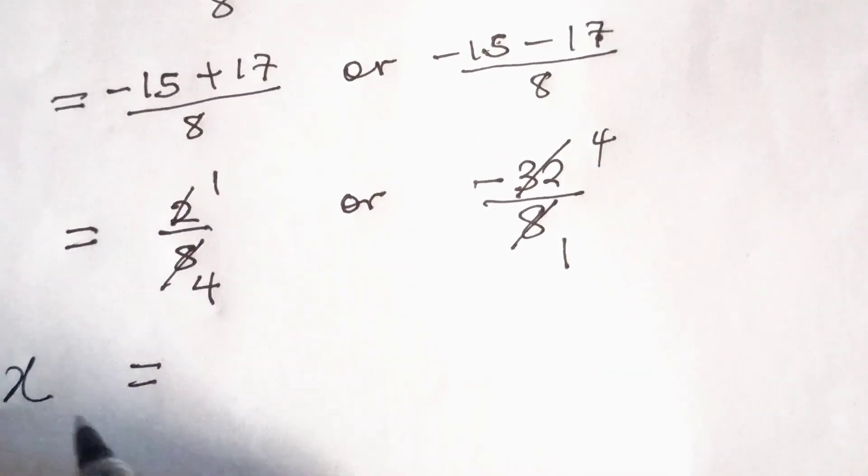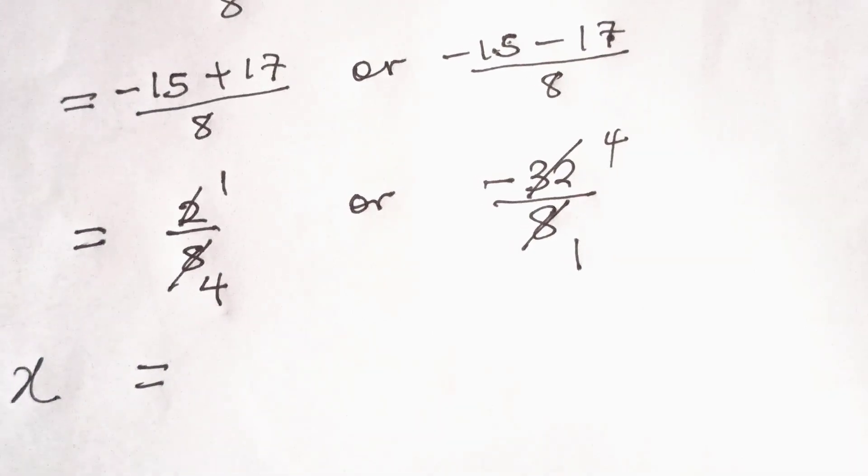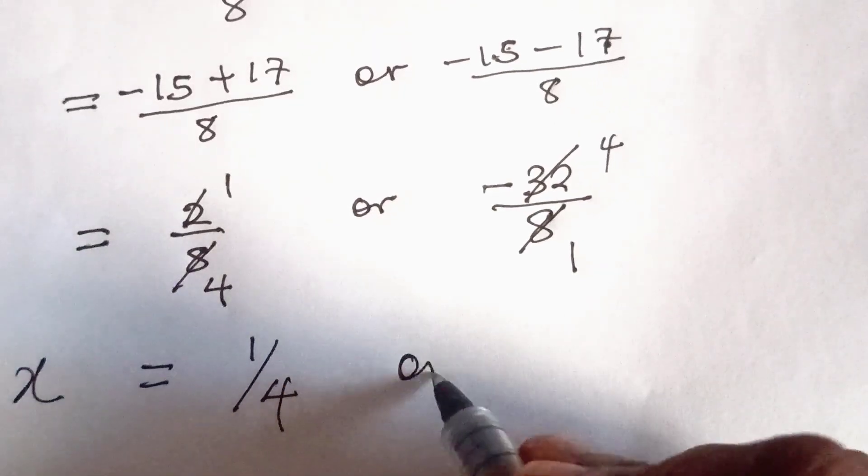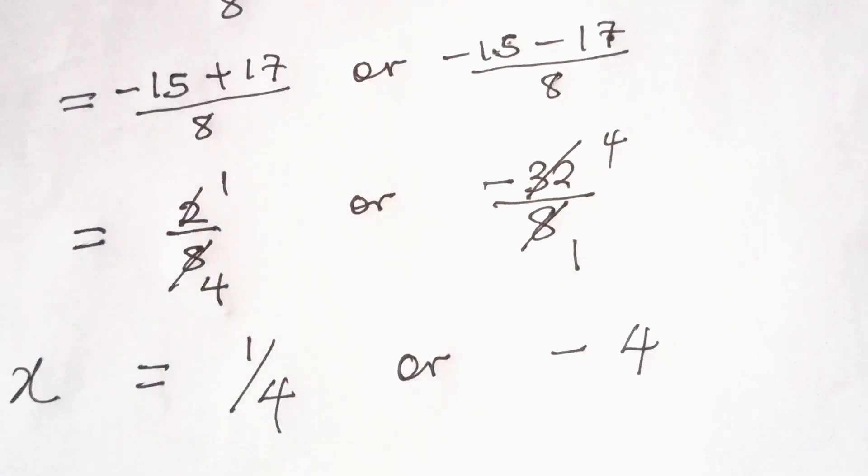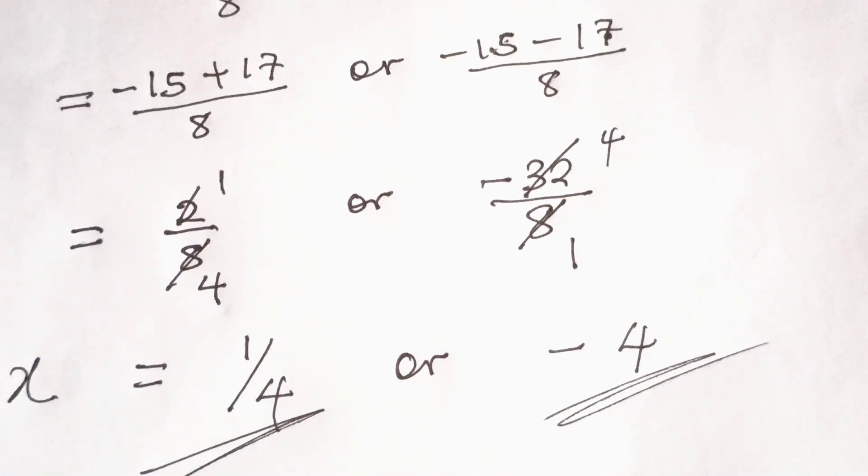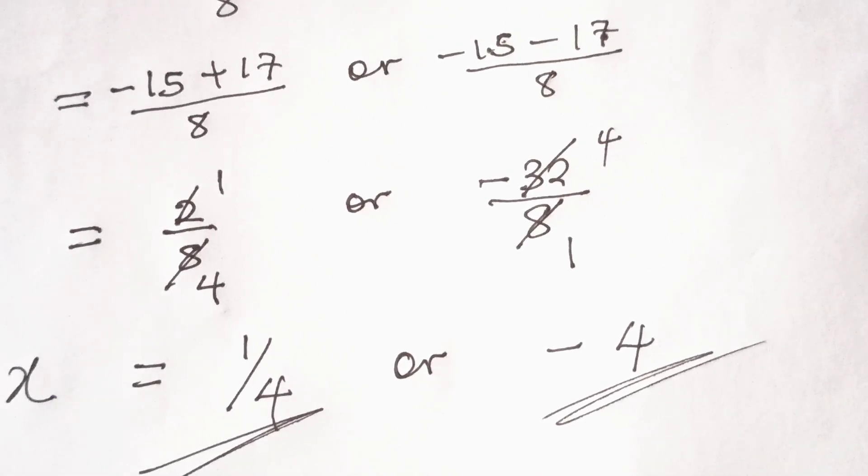So our result is x is equal to 1 over 4 or x is equal to minus 4. So these are the two roots of the quadratic equation. Thank you for watching this video. Please don't forget to like and share and also subscribe to this channel for more interesting videos.